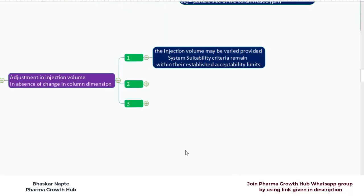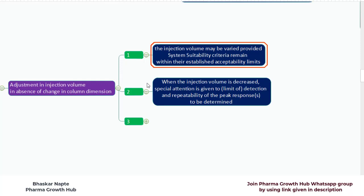The injection volume may be varied provided system suitability criteria remain within their established acceptability limits. The system suitability must not get compromised by the injection volume change. When the injection volume is decreased, special attention is given to the limit of detection and repeatability of the peak responses. A lower injection volume will generate a lower response for the analyte, which may compromise your detection limit, and the low response can increase injection-to-injection variability, leading to failure in repeatability.